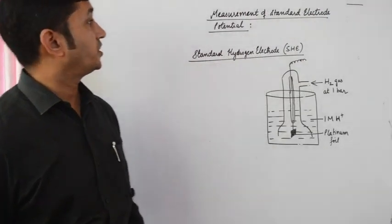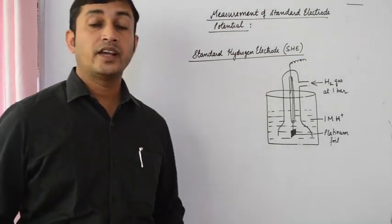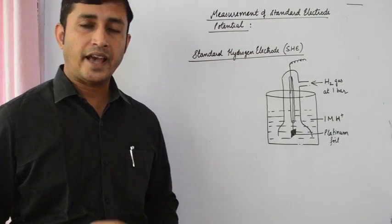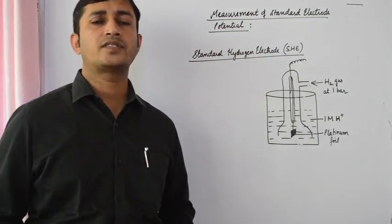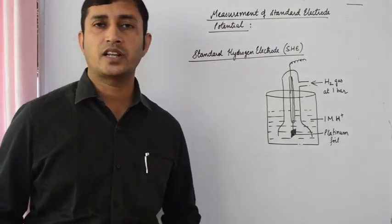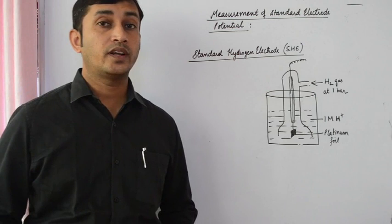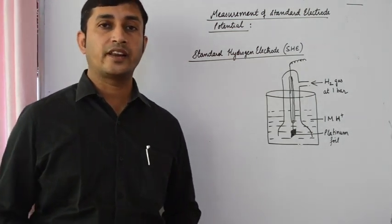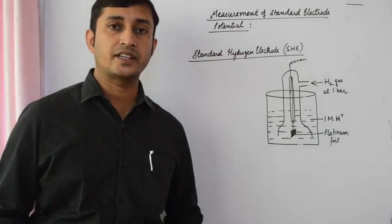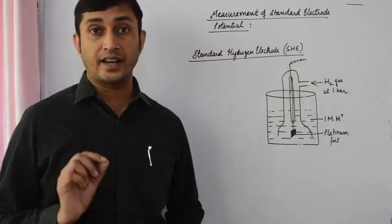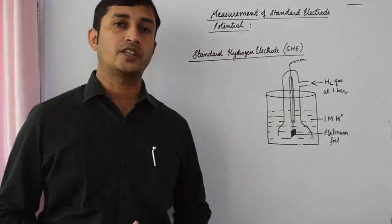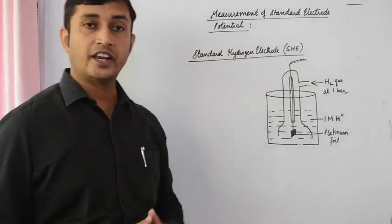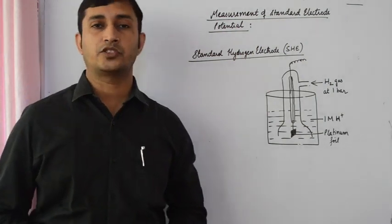Standard electrode potential of any electrode cannot be determined directly due to the following reasons. First, any half cell — whether oxidation or reduction — will not work on its own unless connected to another half cell. Also, the electron releasing or electron accepting tendency of an electrode is a relative tendency, not an absolute tendency. So to measure standard electrode potential of any electrode, we need a reference electrode.